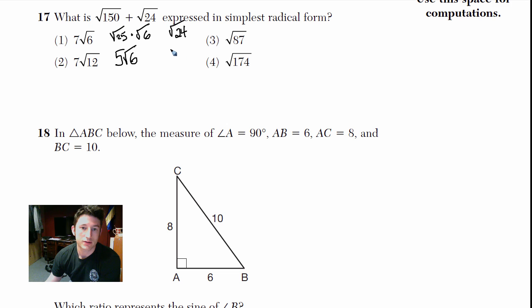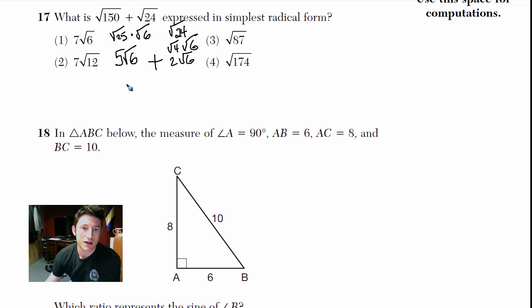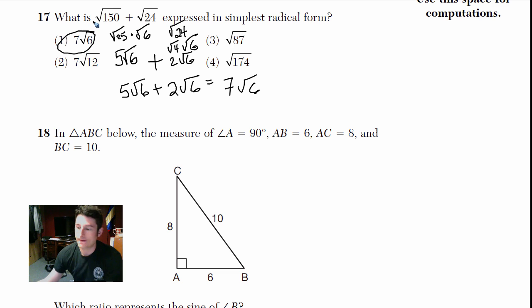For √24, I want a perfect square factor: √4 times √6. √4 is 2, so that's 2√6. Now I have 5√6 plus 2√6, which gives us 7√6 — choice number 1.